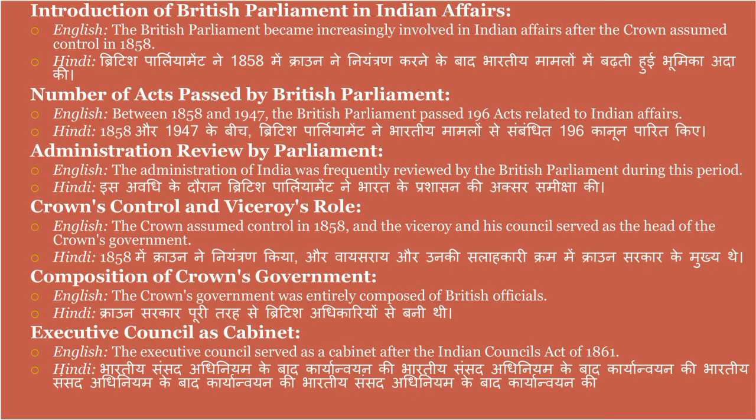The British Parliament became increasingly involved in Indian affairs after the crown assumed control in 1858. British Parliament ne 1858 mein crown ne niantran karne ke baad bhartiya maamlo mein badhti hui bhumika adha ki. Between 1858 and 1947, the British Parliament passed 196 acts related to Indian affairs. 1858 aur 1947 ke beech British Parliament ne bhartiya maamlo se sambandhit 192 kaanoon paarit kiye.